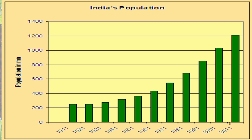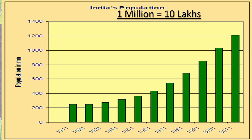Dear children, these bars show the census of population. On the y-axis, you can see the counting — that is, population in millions. 'Mn' means millions here. For example, in 1911 the population of India was approximately 250 million. Remember: 1 million is equal to 10 lakhs, and 10 lakhs means 6 zeros in front of 1.